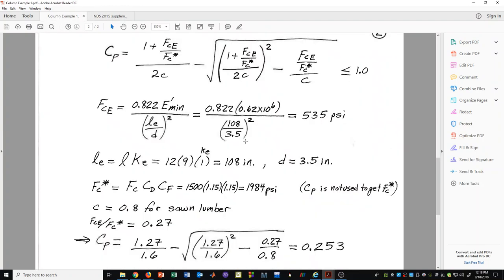Going back now to our calculations, we have 1,500 times 1.15 for C sub D, we have 1.15 for C sub F, and we get 1,984 psi.